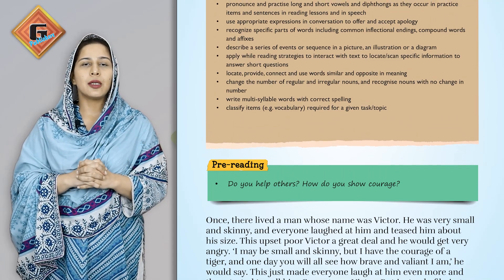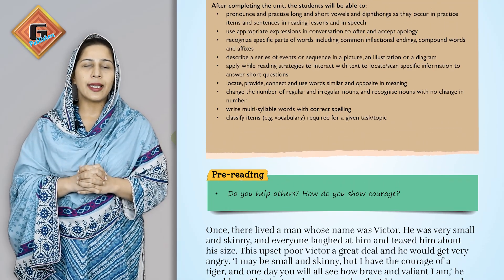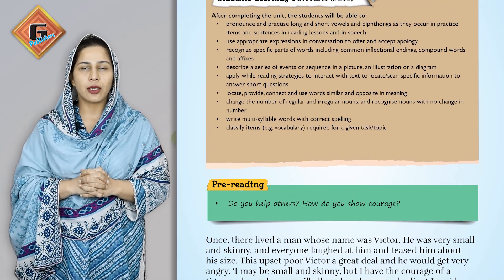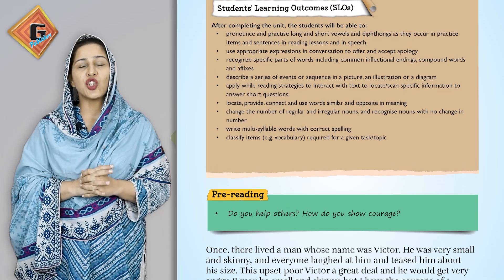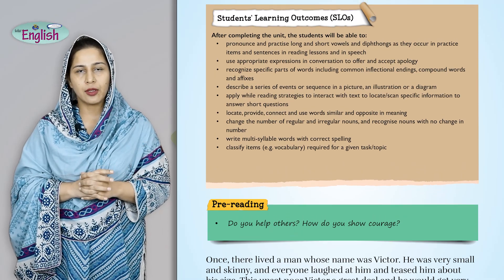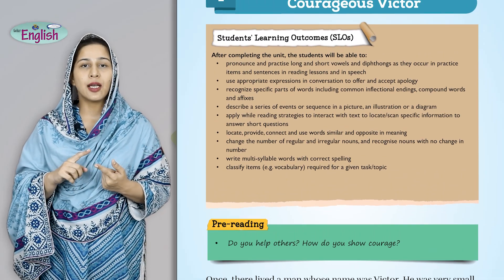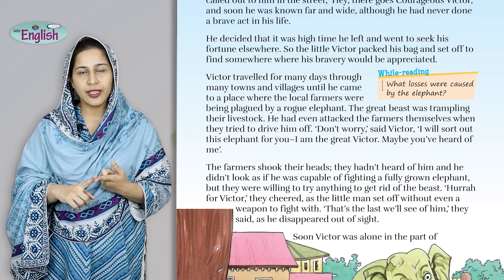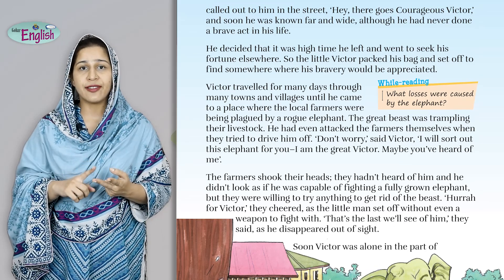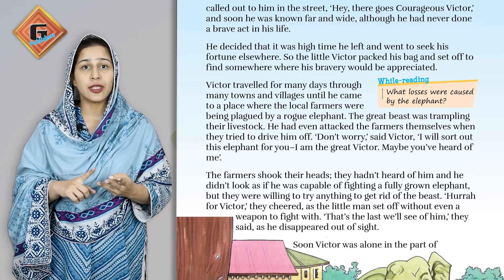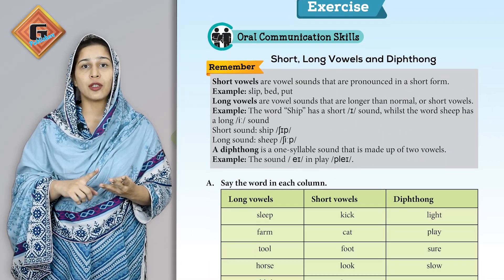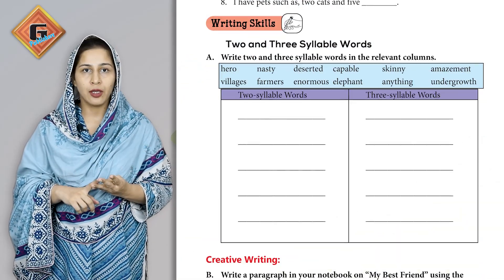Now, the English language has 4 aspects — 4 areas: 1. Listening, 2. Reading, 3. Speaking, and 4. Writing.